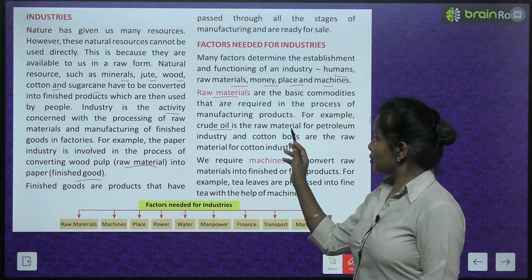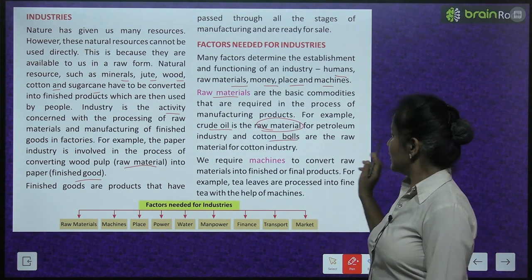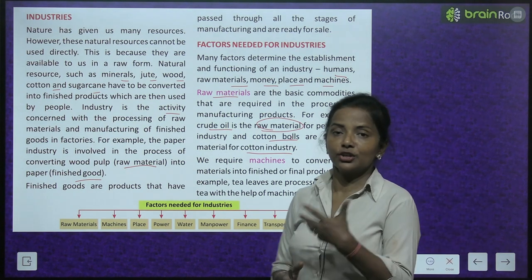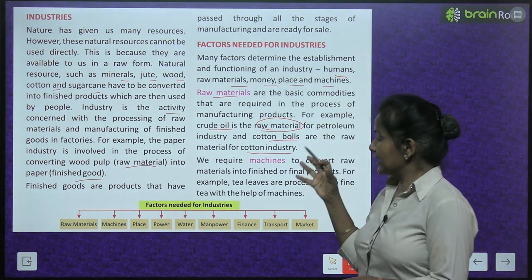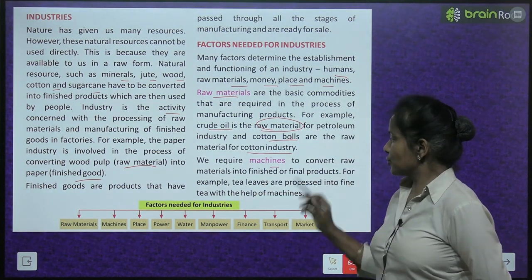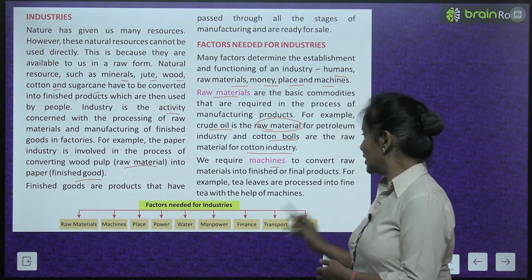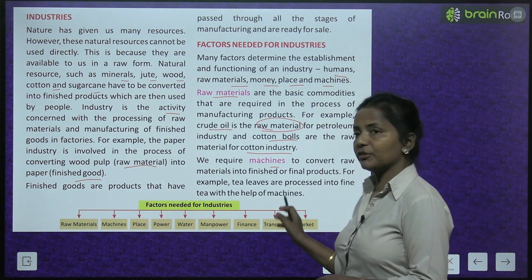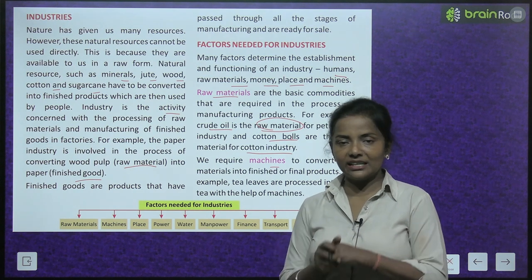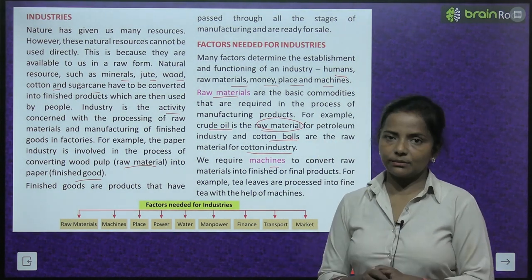For example, crude oil is the raw material for the petroleum industry, and cotton balls are the raw materials for the cotton industry. We also require machines to convert raw materials into finished products. For example, tea leaves are processed into fine tea with the help of machines — only then does it come to the market.